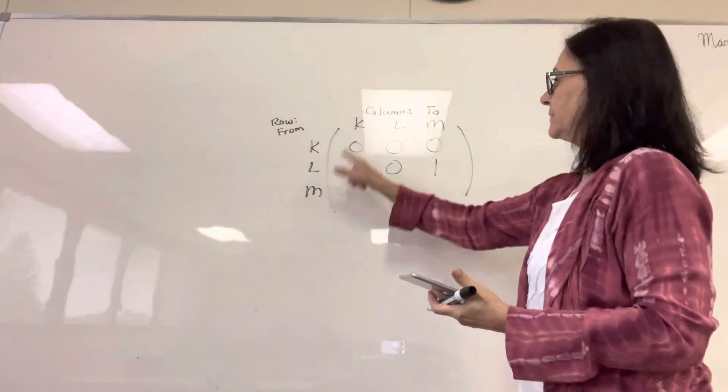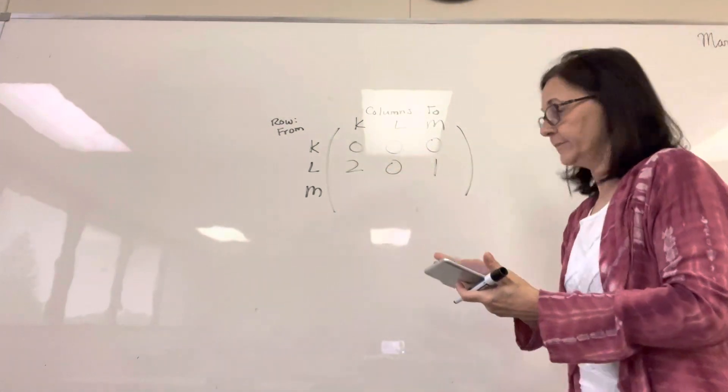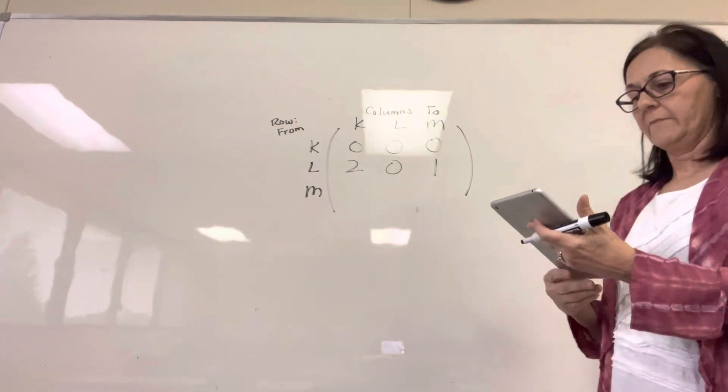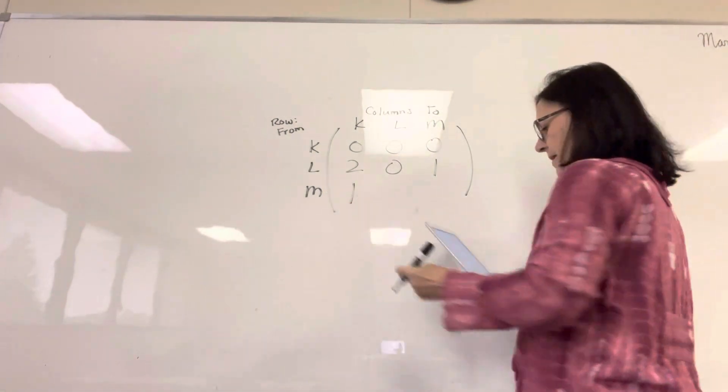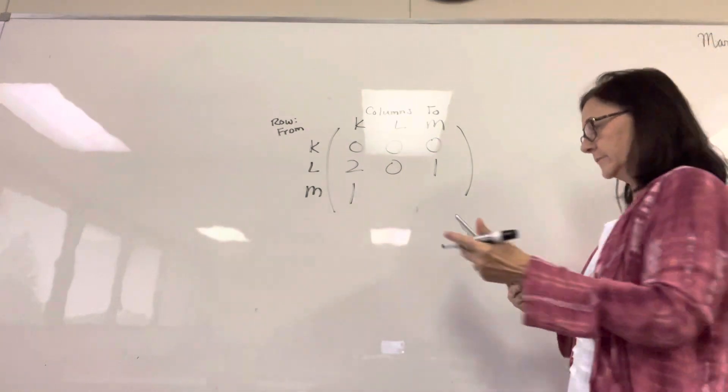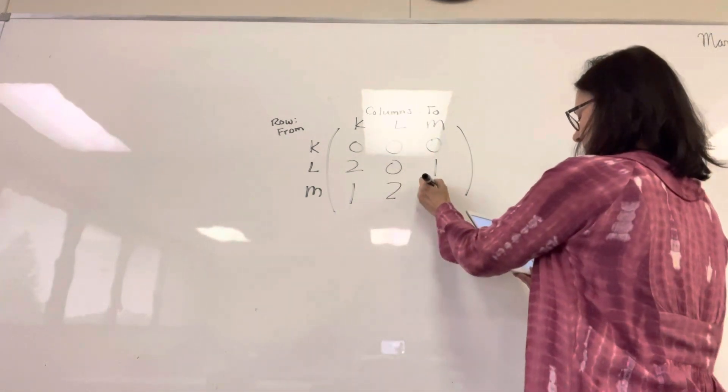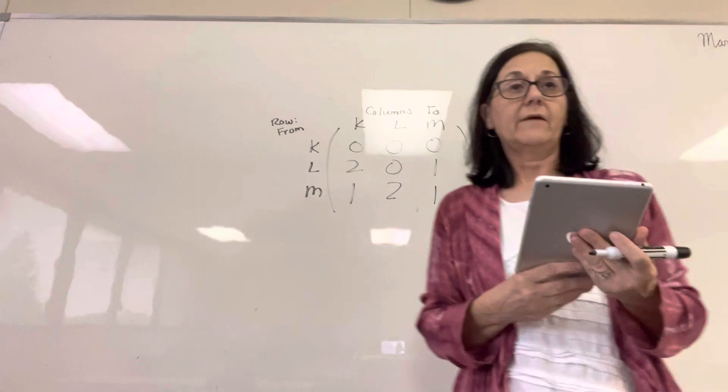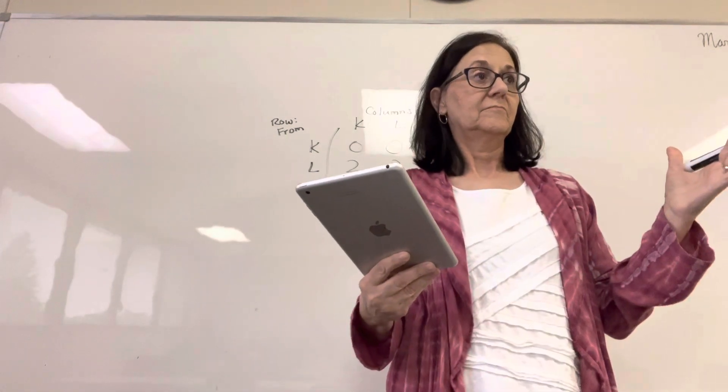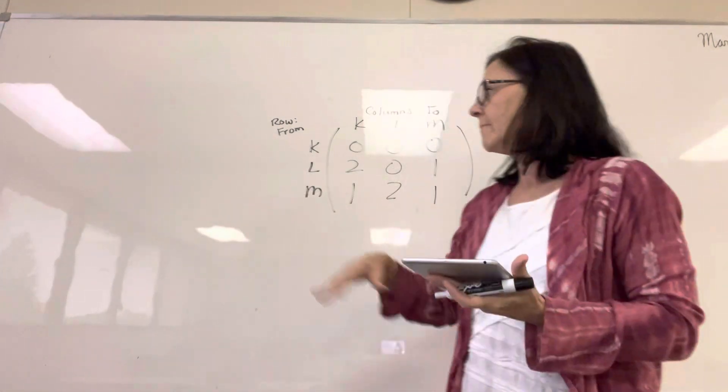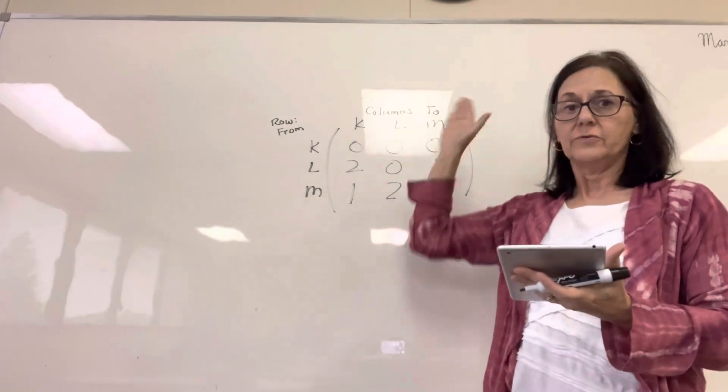Now we're going to go M to K, M to L, M to M. M to K, how many? One. M to L, how many? Two. And M to M? One. That's all a directed network is. From goes in your rows, to goes in your columns.